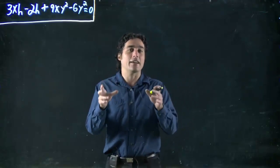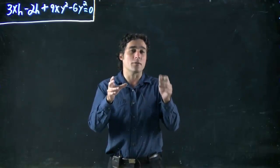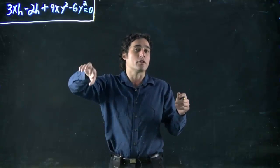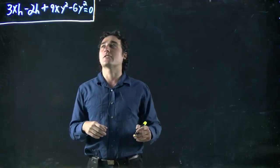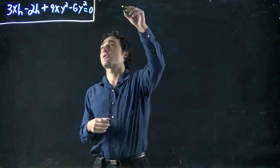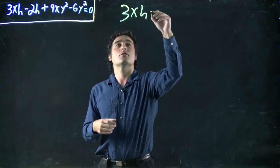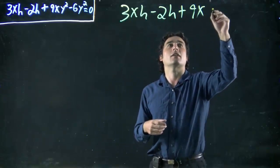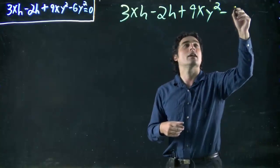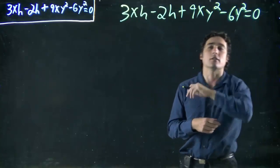Remember, when I say taking it out, it means we're going to put brackets around the term and divide each term by what we put in front of the bracket, what we took out. So I've got a slightly more complicated case right here. What I've got is 3xh minus 2h plus 9xy squared minus 6y squared, all equaling 0.